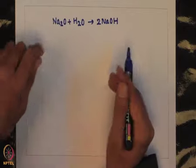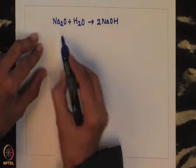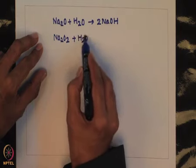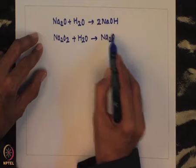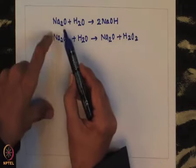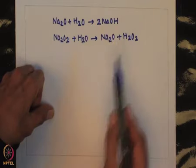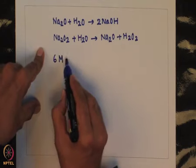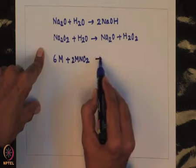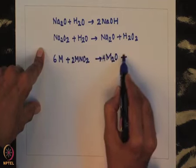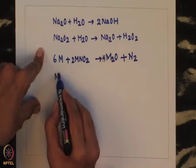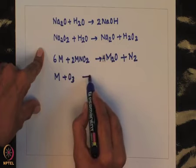For sodium peroxide, reaction with water first gives sodium oxide plus H₂O₂; the sodium oxide then reacts with another molecule of water to give sodium hydroxide. Alkali metals also react with nitrates to give the corresponding oxides, with liberation of nitrogen gas. Additionally, alkali metals can react with ozone to form ozonate salts.